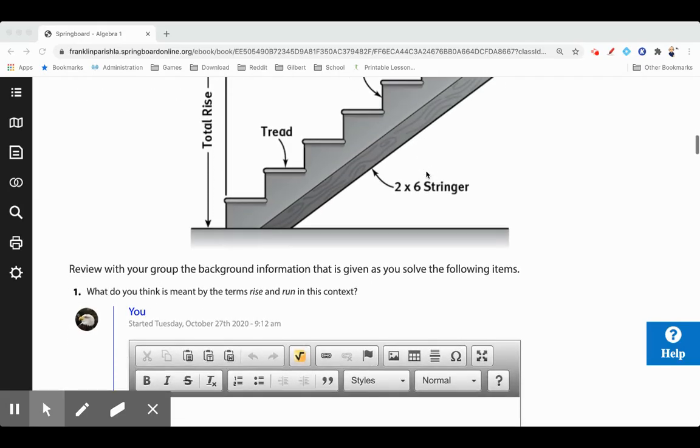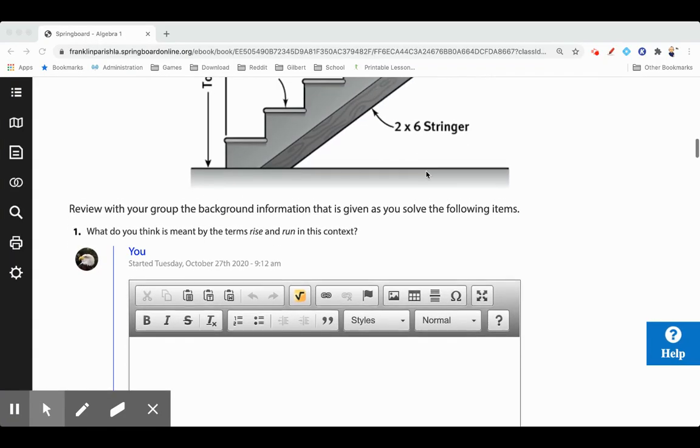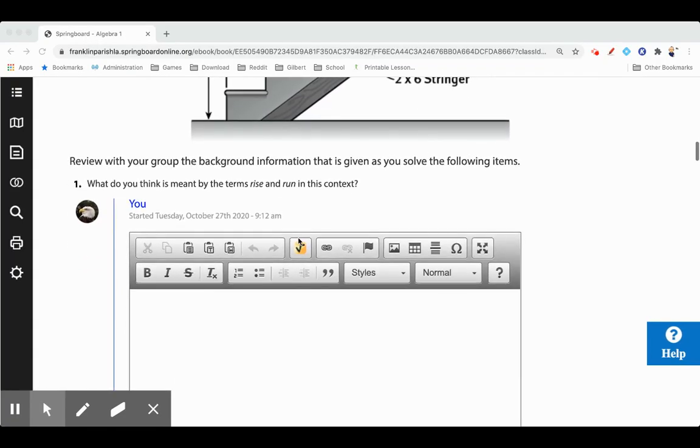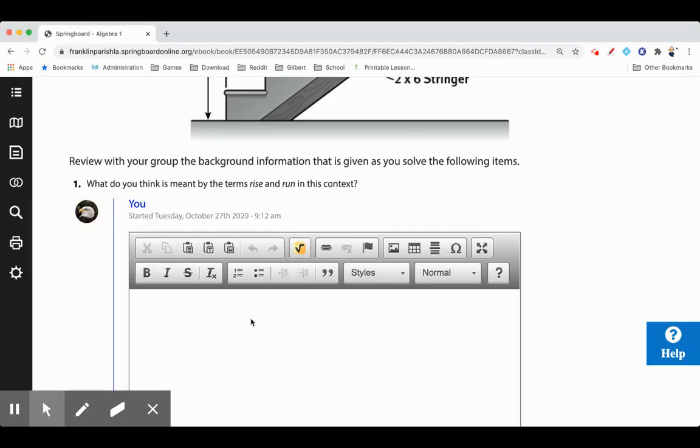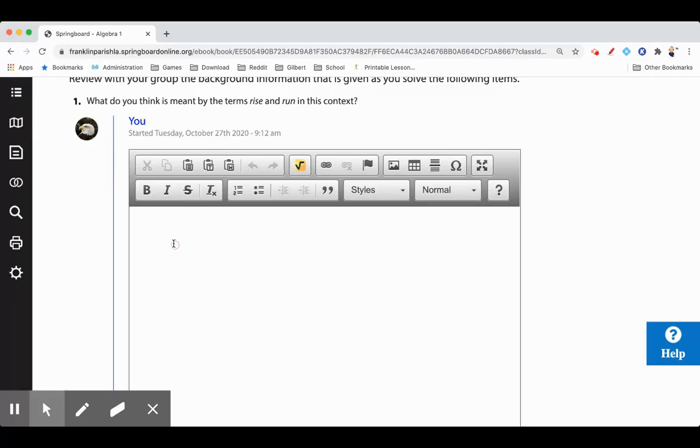Let's review with the background information that's given. What do you think is meant by the terms rise and run in this context? The rise is the vertical change, so basically how much does it go up and down?